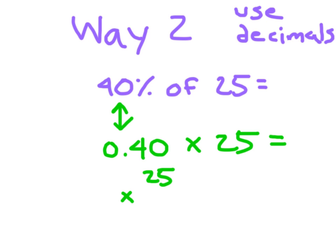0.40 of 25, that means we're going to multiply by 25. I'm going to reorder that, because it'll make it a little easier for me to figure out. 4 times 5 is 20, regroup a 2. 4 times 2 is 8, plus 2 is 10.